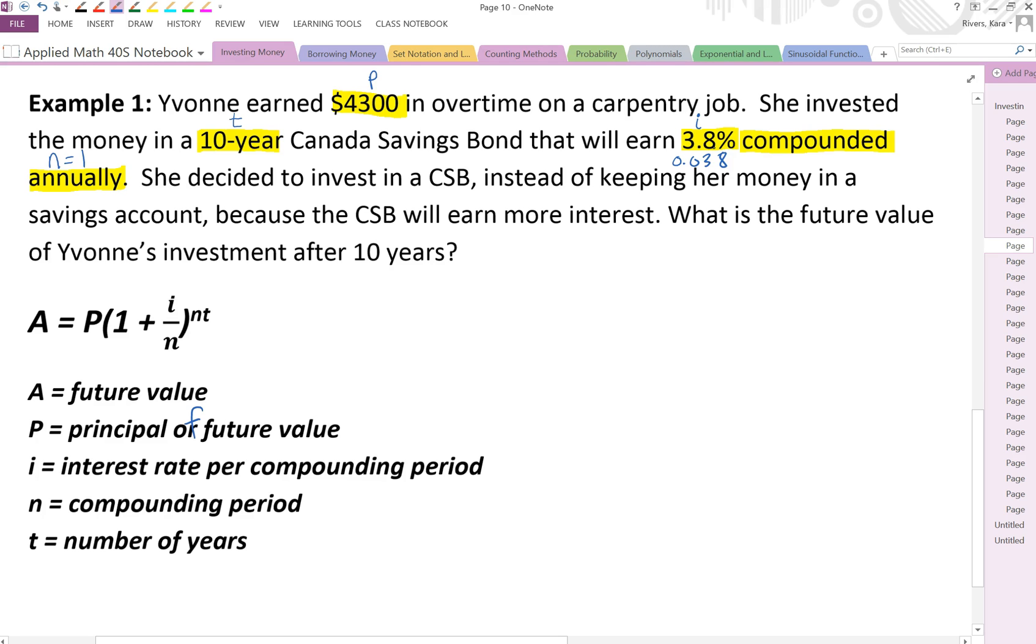So let's plug all of our information in and the question is asking us what is the future value so that's what we're solving for. So if we've got A here that's what we're solving for. P is our principle, 4300, times 1 plus I is 0.038 divided by N which is 1, all multiplied by N times T and that in our case it's 1 times 10.